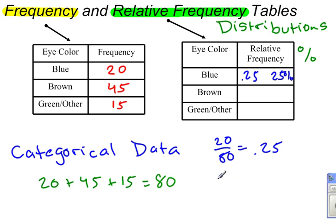Now let's go to the brown eyes. So for brown eyes, we had 45 out of 80, and 45 out of 80 gives us 0.5625. So we could write it as 0.5625, but up here I'm going to go ahead and put it in as a percent. And this percent would be 56.25%.